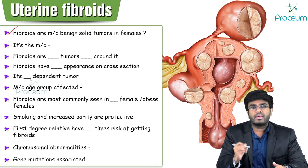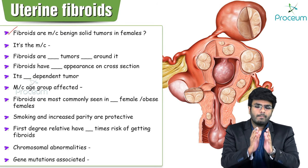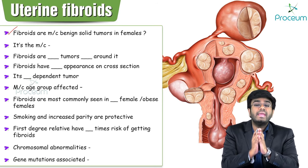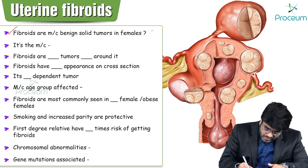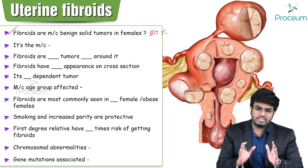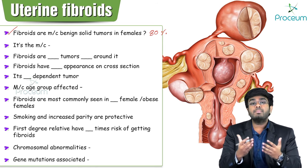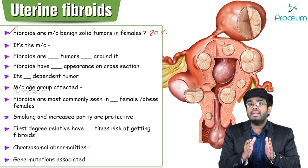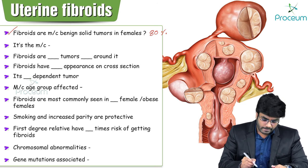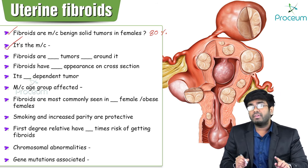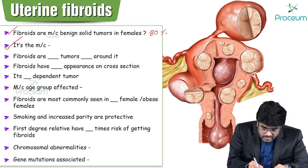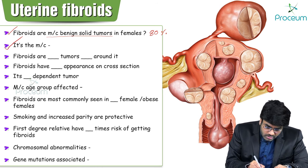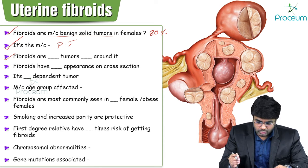Fibroids are the most common benign tumors in females. By 50 years of age, almost 80% of females will have fibroids — they may not be symptomatic, but asymptomatically a small fibroid can be present. They are the most common pelvic tumor and the most common benign solid tumors in females.